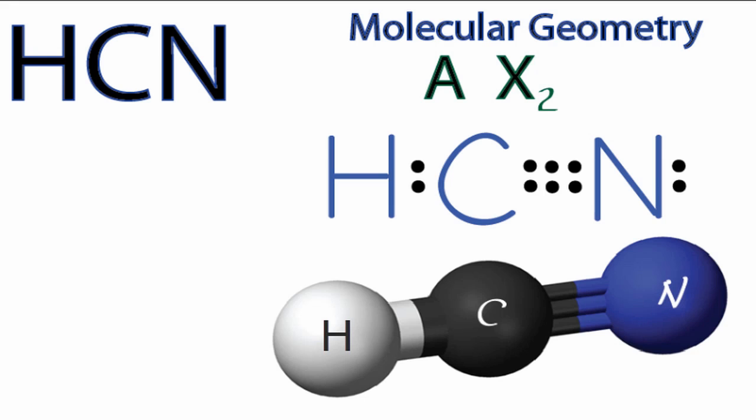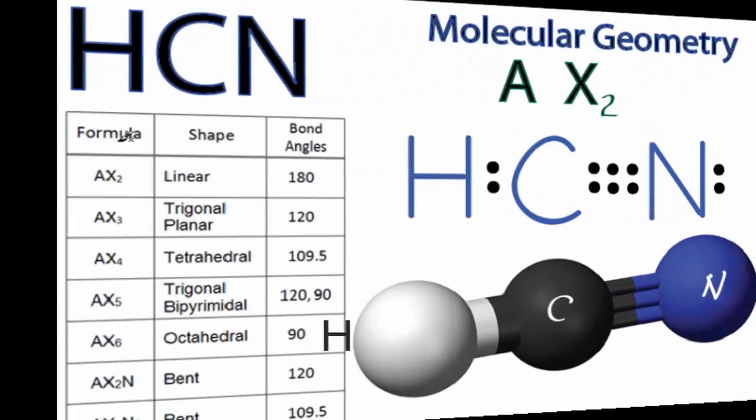You could have memorized that AX2 is a linear molecular geometry, or if you had one available, you could look it up in a table. Over here in our table, we have the formula, so we're looking at AX2, and it's the first one, very simple molecule, and it's linear with bond angles of 180 degrees.